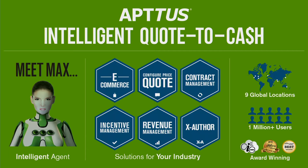Aptis is the intelligent quote-to-cash market leader. We make all kinds of solutions for quote-to-cash: CPQ, contract, revenue. We have advanced solutions like Xauthor, an intelligent agent, and a million-plus users globally. This is not just a shameless plug — we're actually going to be talking about this later. When you look at applications you want to mobilize, where do you start? For us, with so many applications, it was really a journey to decide which ones to do first.